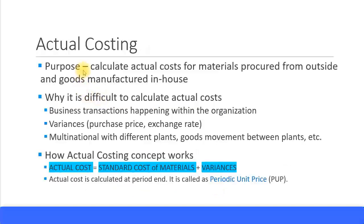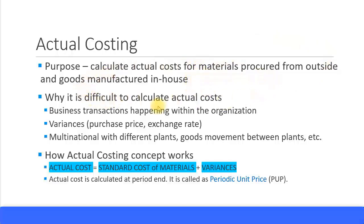The purpose of actual costing is to calculate actual costs for materials procured from outside using purchase orders, and for goods manufactured in-house. So it covers both items procured externally and items being manufactured in-house, including both semi-finished and finished products.